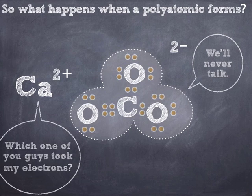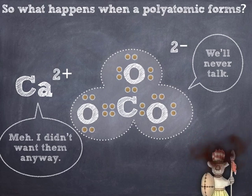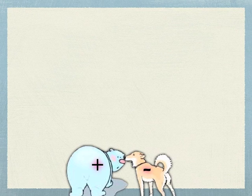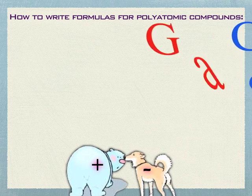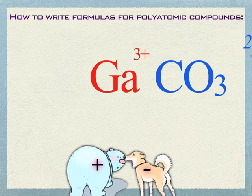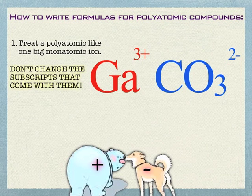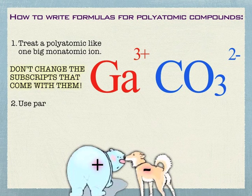When we talk about carbonate, that's how it comes — CO₃ with a negative two charge. The only thing you really have to take into account is that you can't change the subscripts that come with polyatomics. That three that comes after the O is stuck there. Carbonate comes off the shelf as CO₃, glued together, and there's nothing you can do about that. So don't ever change the subscripts of a polyatomic.